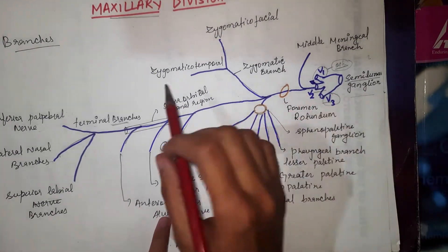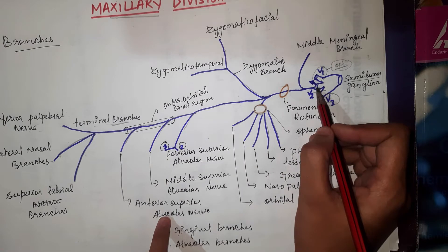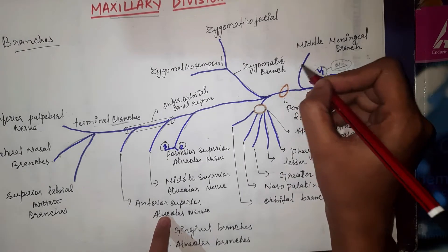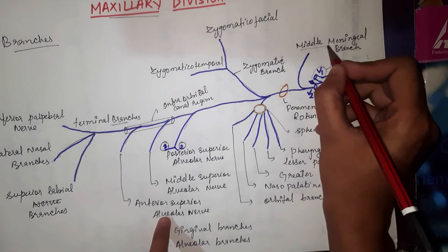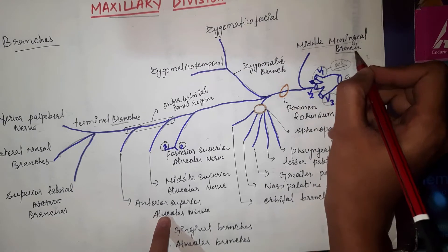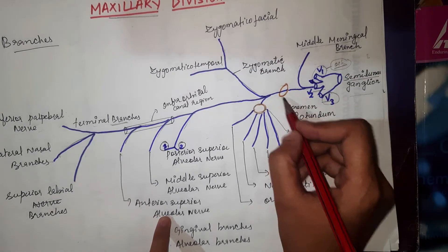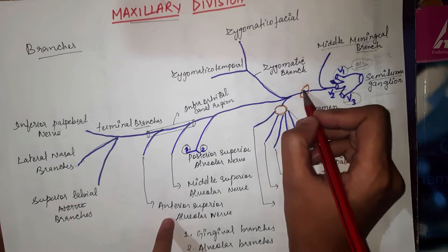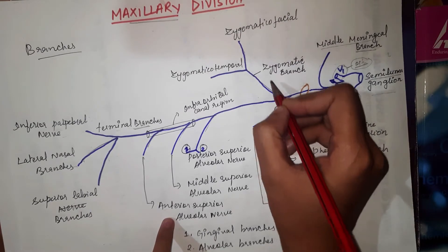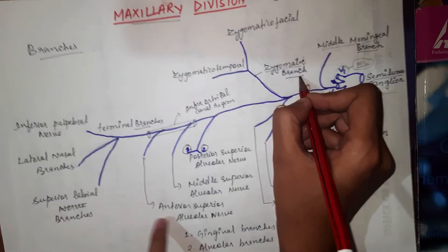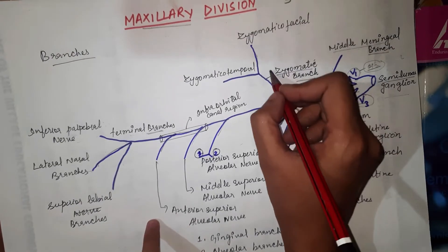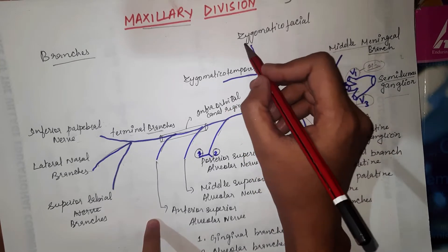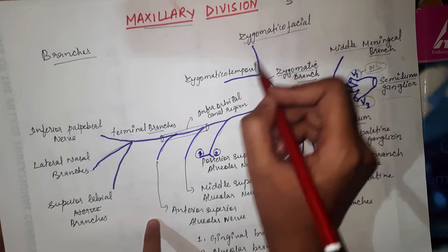The maxillary division gives off its first branch known as the middle meningeal branch, which is the smallest branch. It then passes through the foramen rotundum and gives off one more branch called the zygomatic branch. The zygomatic branch is further divided into two branches: the first is called the zygomaticofacial branch and